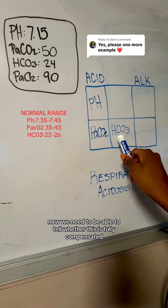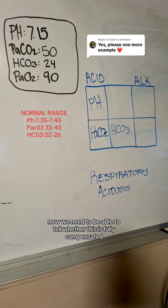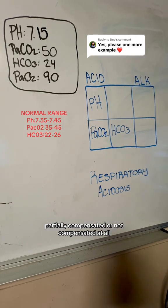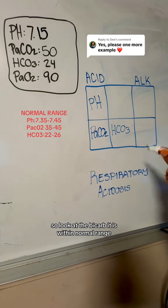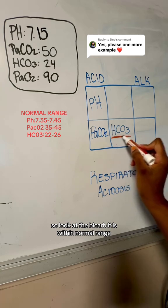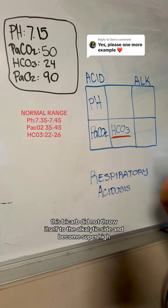Now we need to be able to tell whether this is fully compensated, partially compensated, or not compensated at all. So look at the bicarb. It is within normal range.